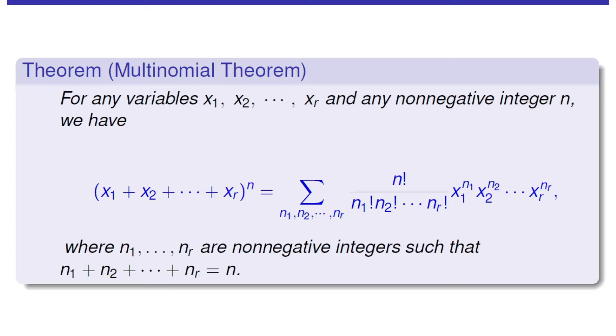Here is the summation over this n1 through nr, where n1 through nr are non-negative integers such that n1 plus n2 plus nr equals n.